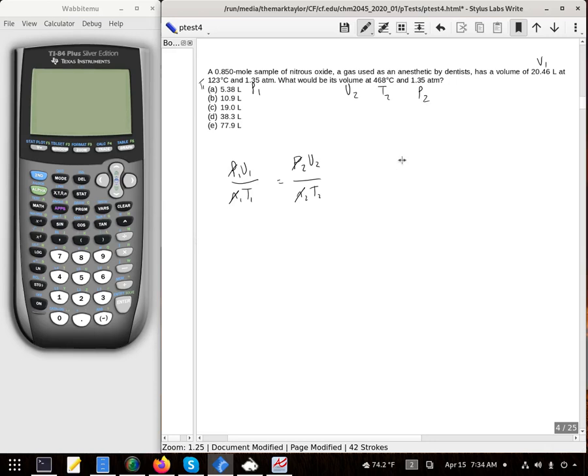So we're doing something like this. I got 20.46 liters. I have a temperature of Celsius here. I've got to remember to add 273 to that because we want these to be in Kelvin whenever we use temperatures.